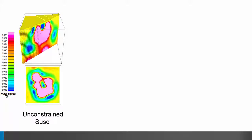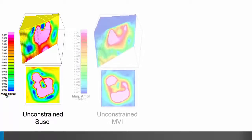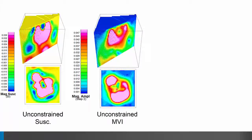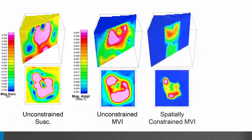Their next step was to use magnetization vector inversion to account for the remnant magnetization. The unconstrained MVI model was able to resolve a more complex surface geometry and resulted in magnetization amplitudes that were in agreement with the drill hole data. They then proceeded to constrain the spatial extent of the kimberlite using a forward model, which resulted in a better defined model with a complex surface geometry and a pipe-like shape at depth.